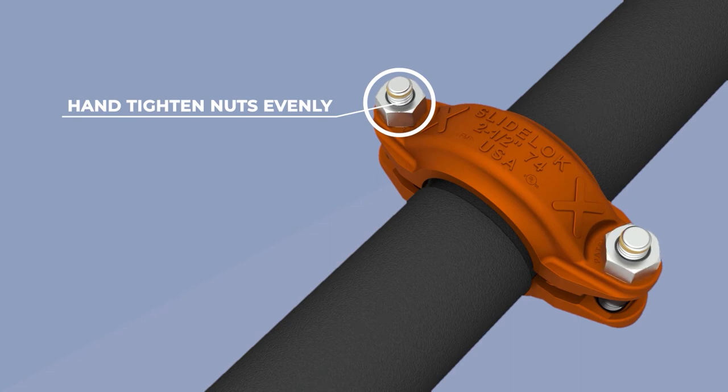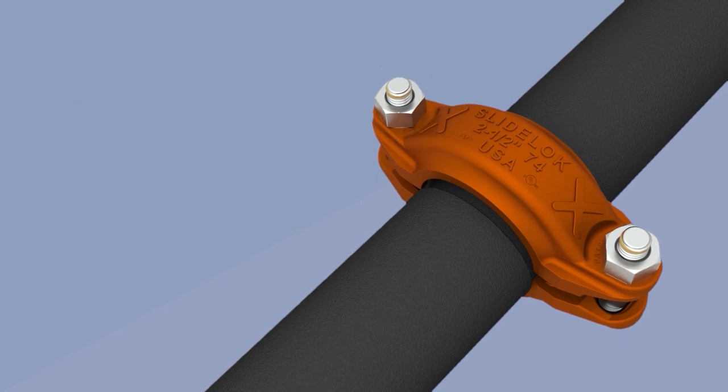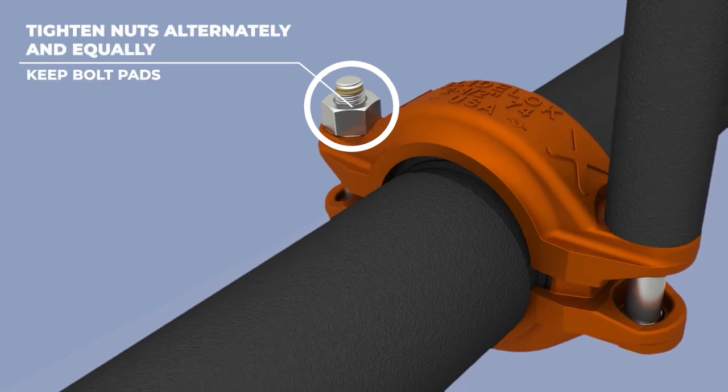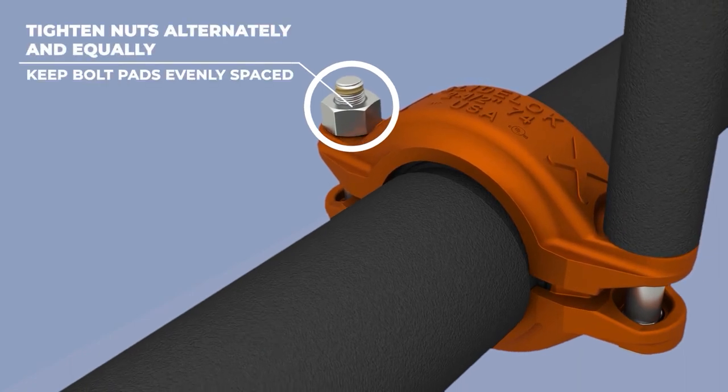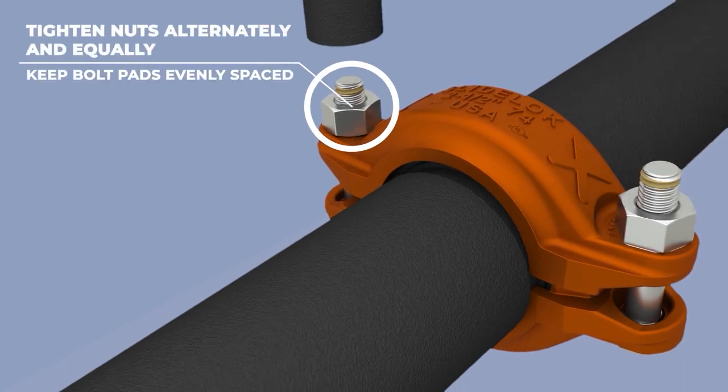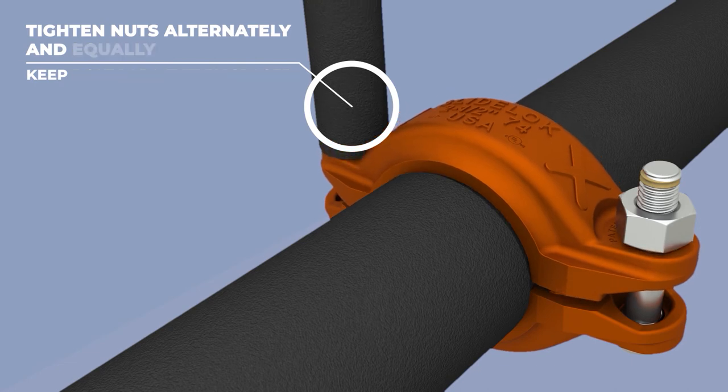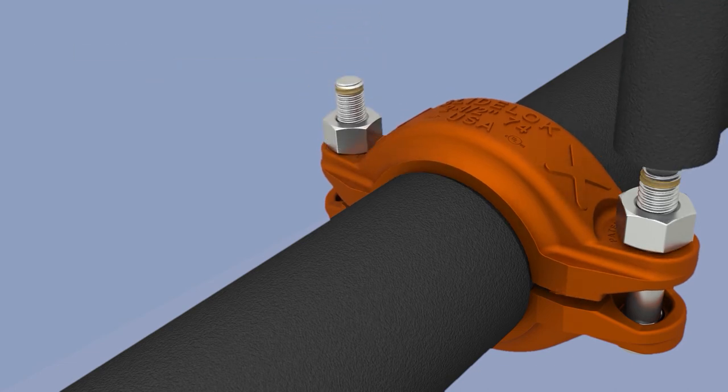Hand tighten the nut evenly on each side of the coupling. Securely tighten nuts alternately and equally, keeping the gaps at the bolt pads evenly spaced.